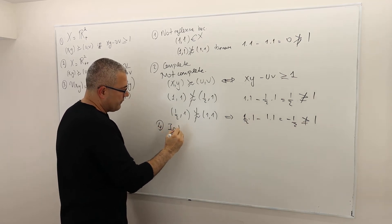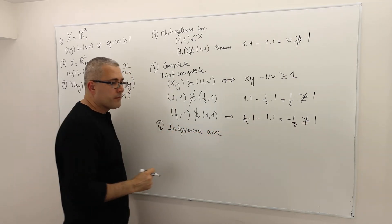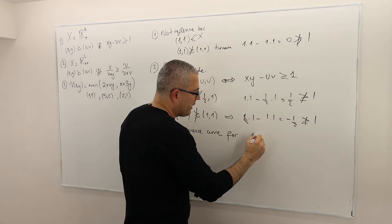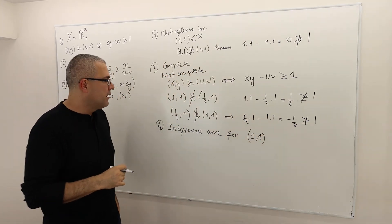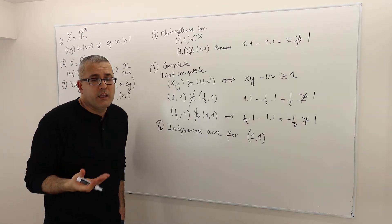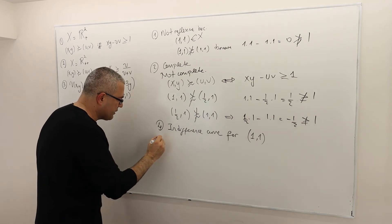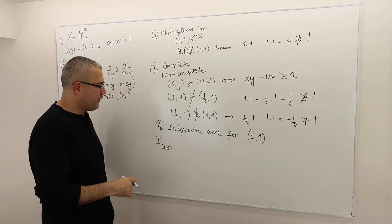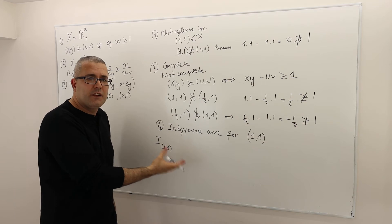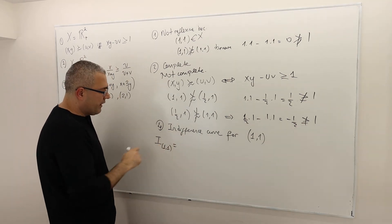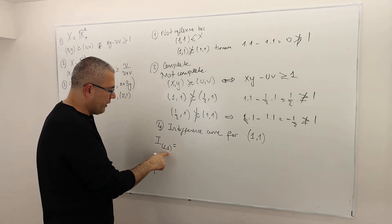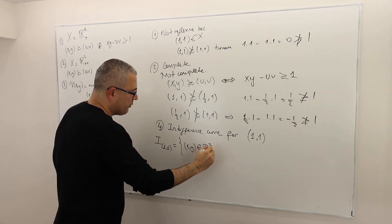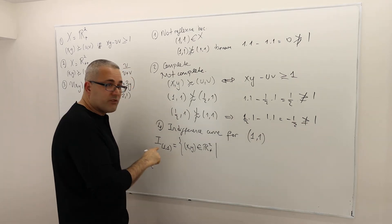So what about the indifference curve for bundle (1, 1)? I always write the definition first — I see a lot of students do it that way, which is a good thing, but don't forget you're not going to get points just for writing the definition. It's just helpful to have it there. So: the indifference curve of the point (1, 1) is the set of vectors (x, y) in R² plus such that (x, y) is indifferent to (1, 1).